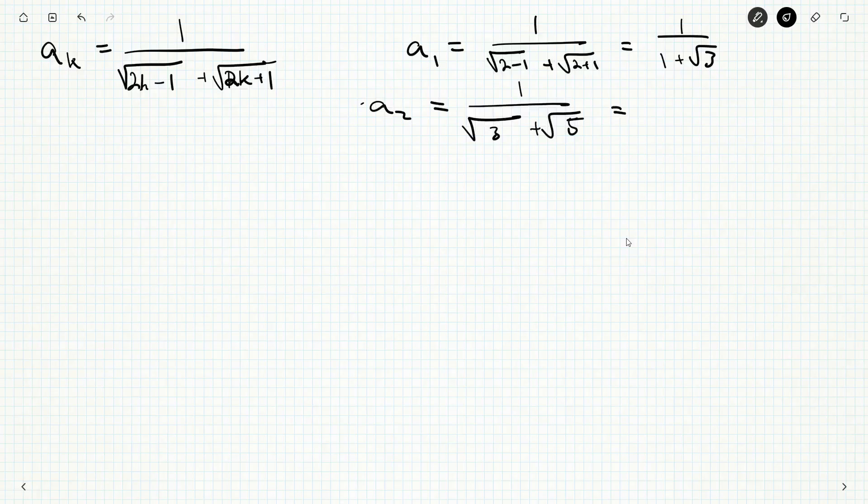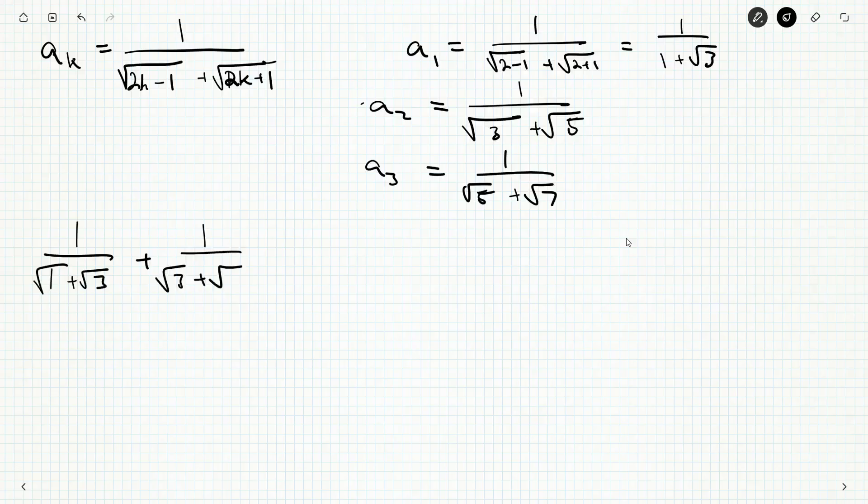a2 would be root 3 plus root 5. I'm not going to bother trying to simplify him right now. What would a3 look like? a3 would be 1 over 2 times 3 is 6, so we'd have root 5 plus root 7. So these numbers are appearing in a predictable way, but they're not the easiest things to add. If I were to add just a1 and a2, this is going to be a nightmare because we need a common denominator. And I can't use my calculators. Calculators are not allowed on this contest.